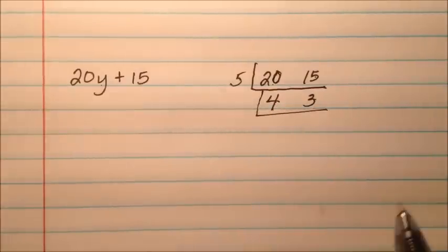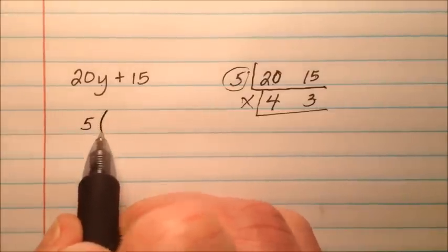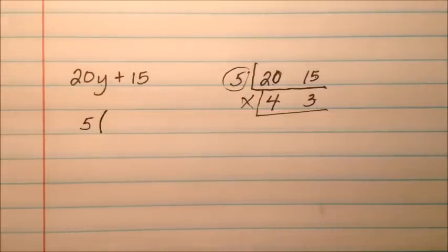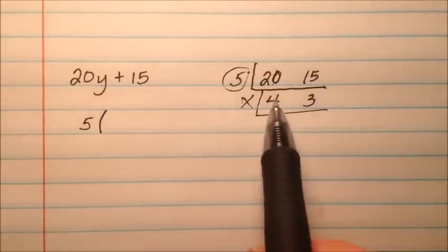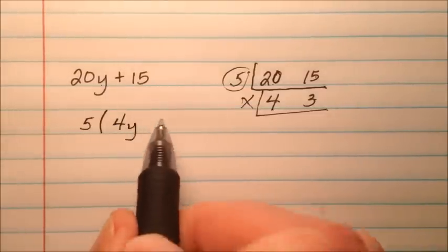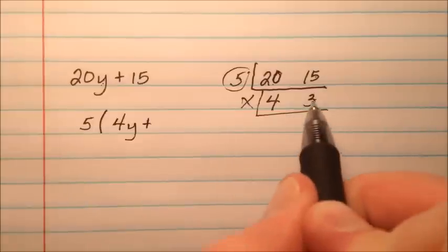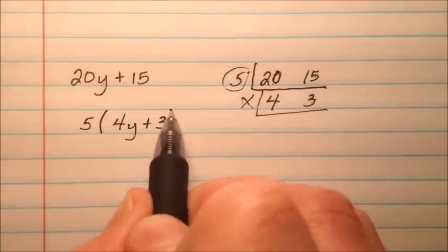So 4 and 3, is there another common factor? Well no. So here's what this is going to look like. We're going to have the 5 outside, that's the greatest common factor that we're dividing out of both of these terms. And we're left with 4, but that first term had a y, so we need to include that y in there. And then plus 3 right there.